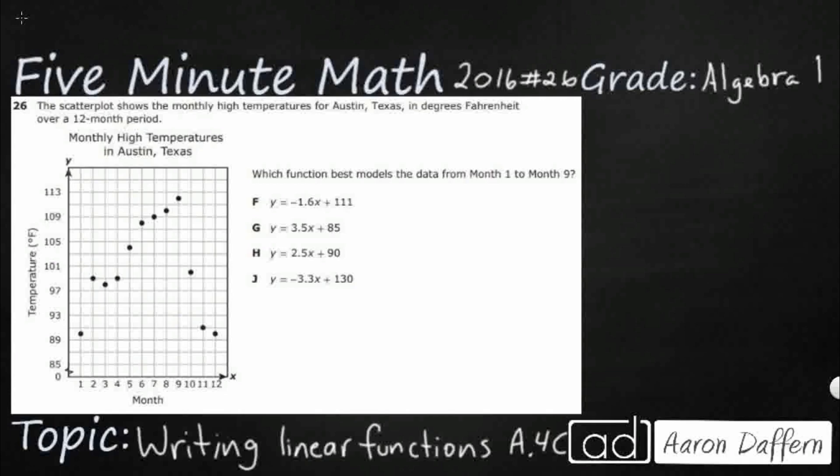So we have a scatter plot here showing monthly high temperatures for Austin, Texas, and we're asked which function best models the data from month 1 to month 9. Now this is important, month 1 to month 9, because look what happens in month 10, 11, 12. All three of these are outliers if we were to look at the entire year.